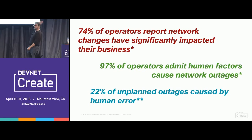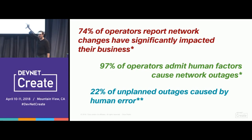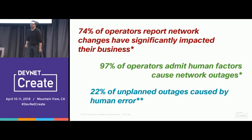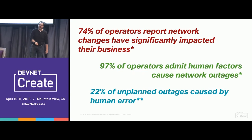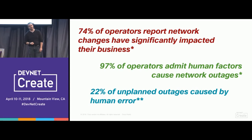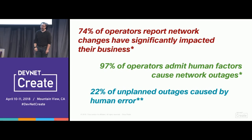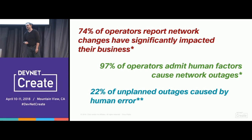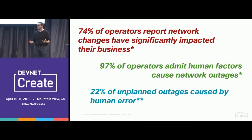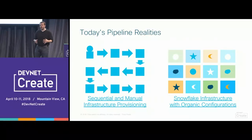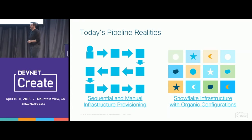Studies back this up: 74% of operators report that network changes have significantly impacted their business operations. 97% of operators will admit that human factors have caused network outages. 22% of unplanned outages are caused by human error — actually lower than I'd have thought. These statistics keep coming through. Why do we all laugh when we hear these quotes? Because we know they're true.